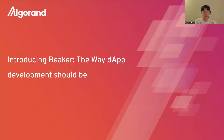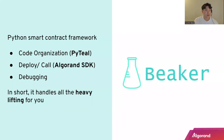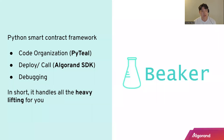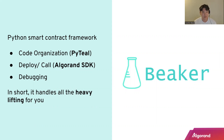Now let's get to the fun part — let's talk about Beaker: the way that development should be. Beaker is a Python smart contract framework. It improves code organization when writing smart contracts with PyTeal, makes deployment and interaction with your smart contract using the Algorand SDK much simpler and easier, and also provides tooling for debugging and testing your code. In short, it handles all the heavy lifting for you and abstracts away the complexity so it becomes very familiar and easy to build on Algorand.